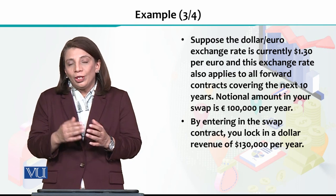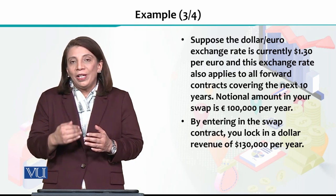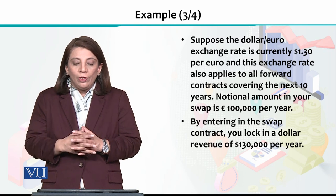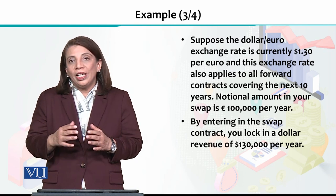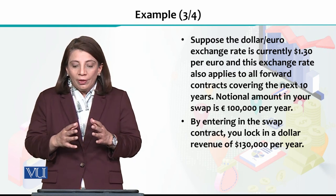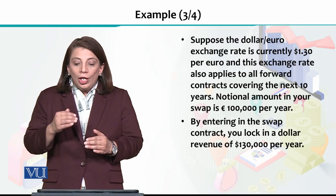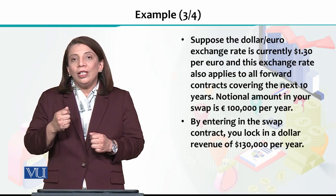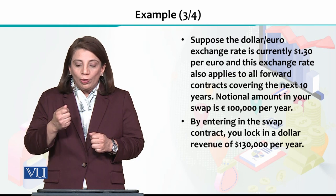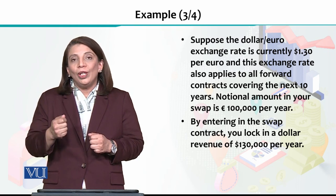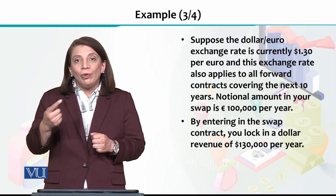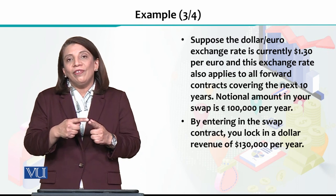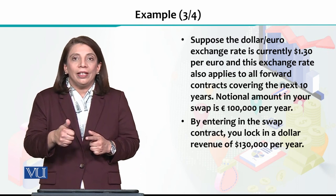Suppose the exchange rate at the time the contract takes place is $1.30 per euro — this is the exchange rate prevailing in the market. From this particular exchange rate, they have defined their swap contract, and said that all subsequent payments will be made based on that locked exchange rate of $1.30.